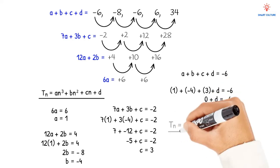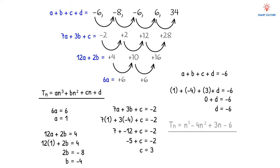To verify this rule, we'll determine the value of the second term by substituting n = 2: 2³ - 4(2²) + 3(2) - 6 = 8 - 4(4) + 6 - 6 = 8 - 16 = -8. The positive 6 and negative 6 cancel out. This matches the second term of the original sequence, confirming the rule is correct.